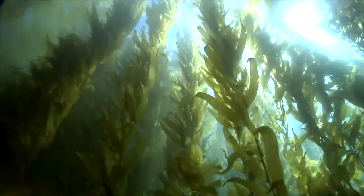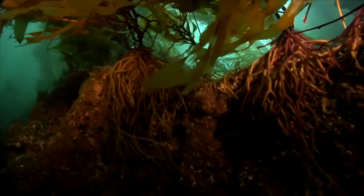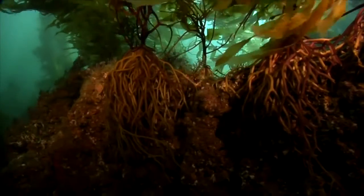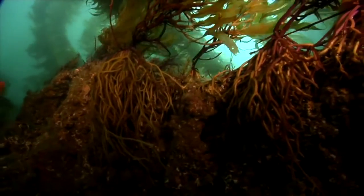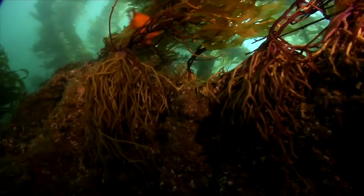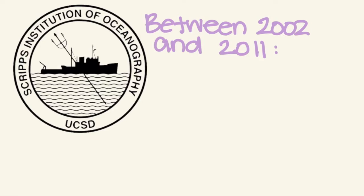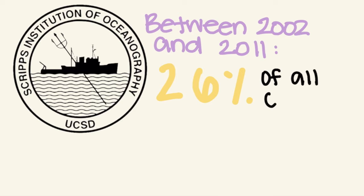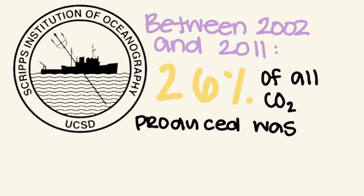Oceanic sequestration is when the ocean traps and stores carbon. We call this blue carbon. According to UC San Diego's Scripps Institute of Oceanography, 26% of all carbon dioxide released every year between the years 2002 and 2011 was absorbed by the global ocean.